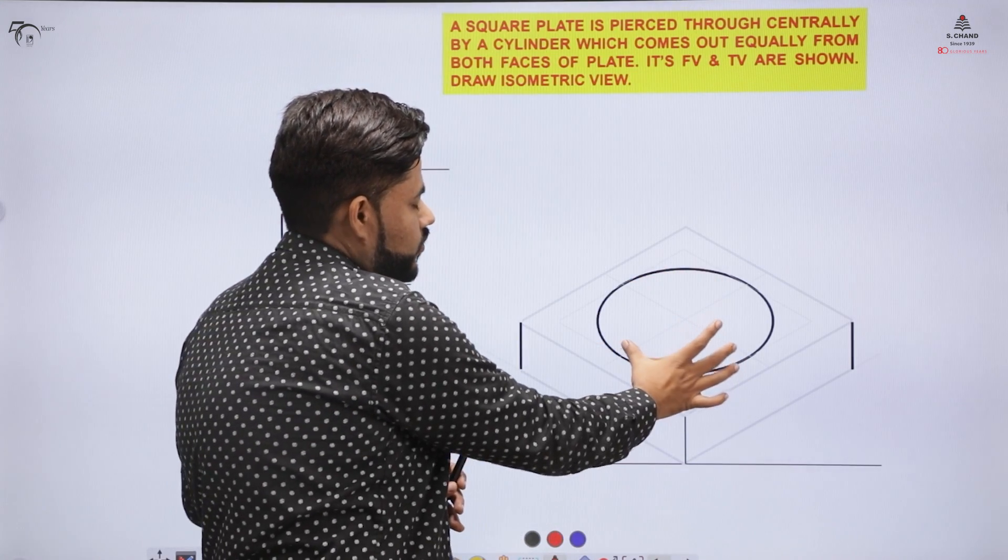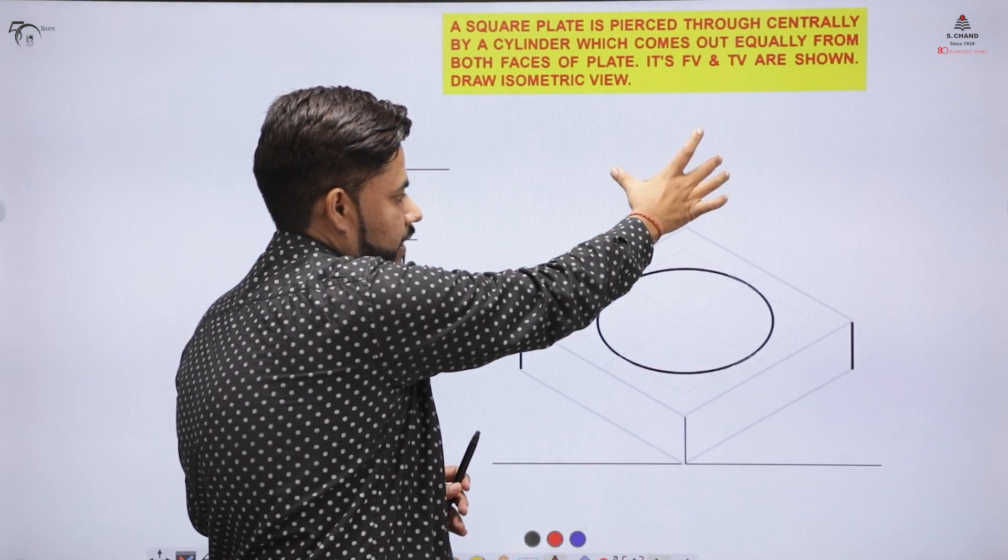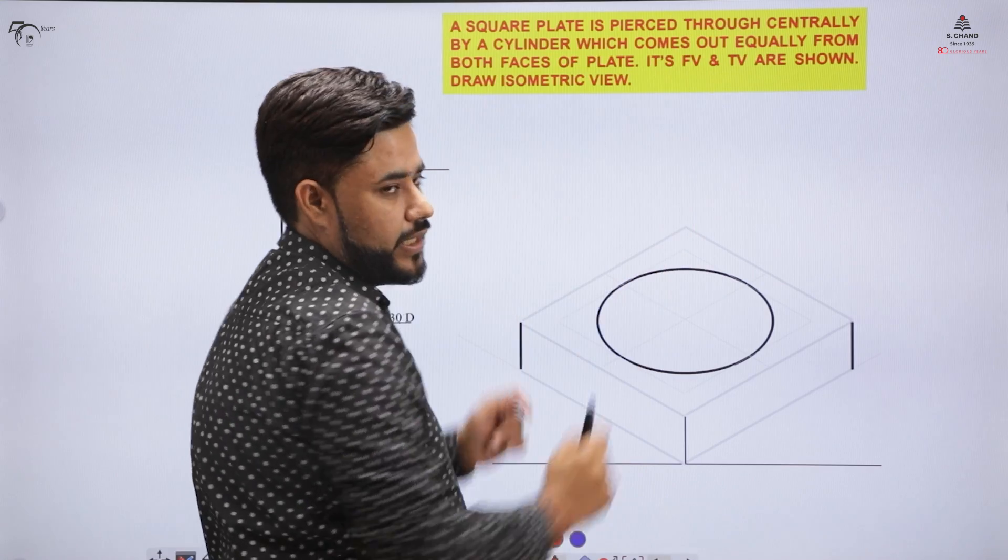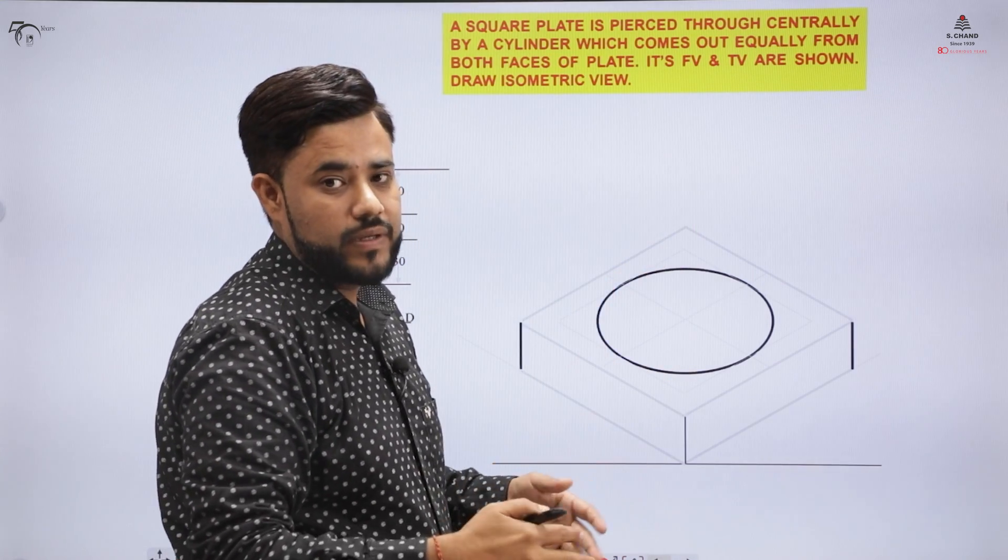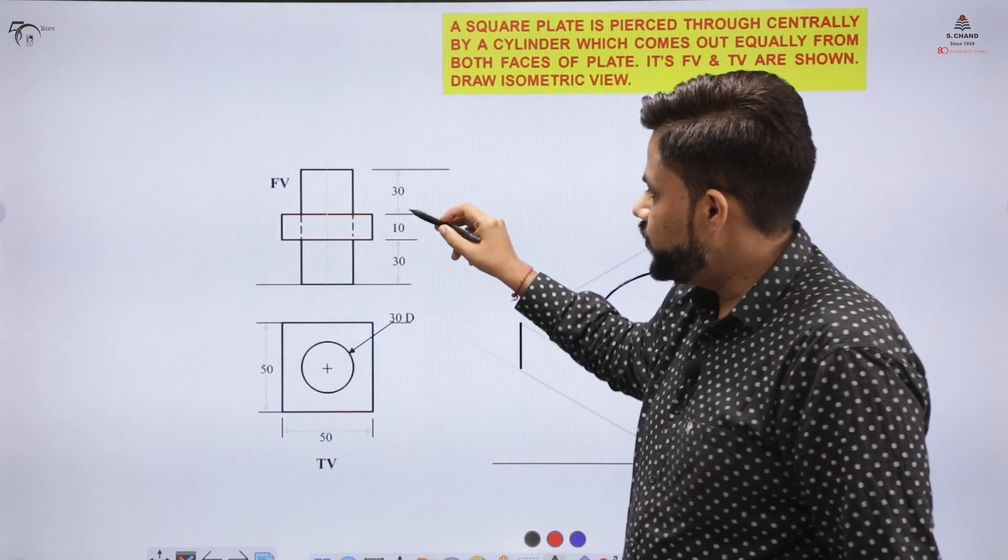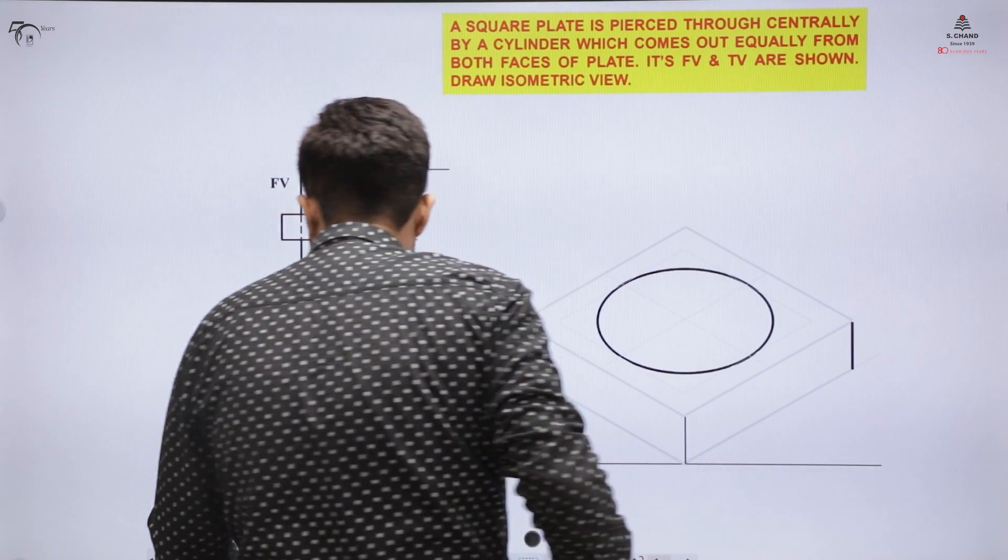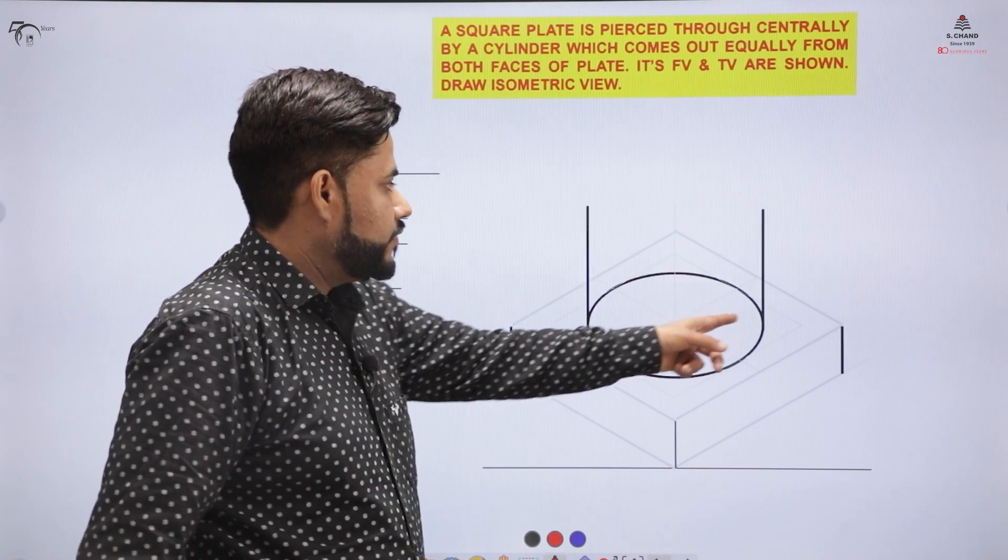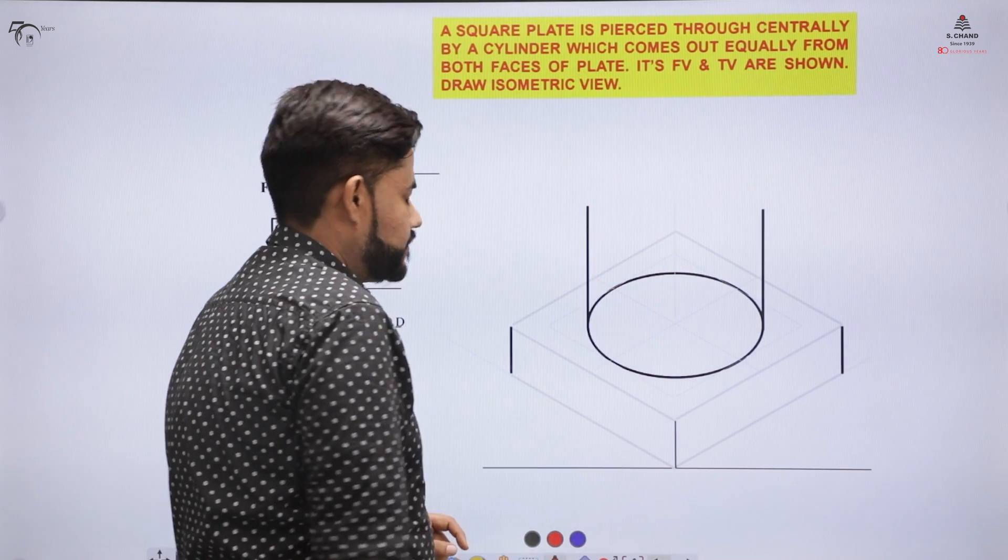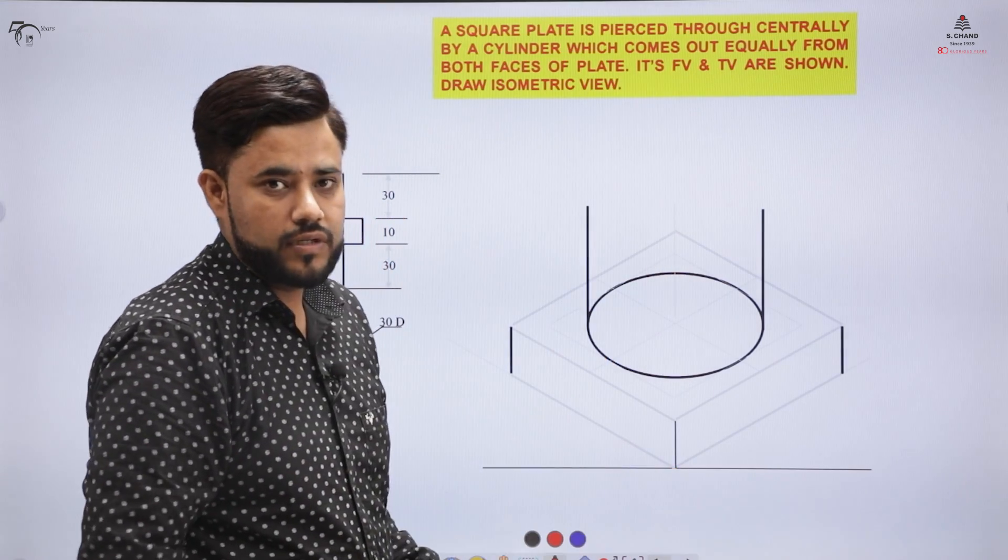Now I need to place this cylinder equally from this side above and also from the bottom. For this I need to increase the height of this circle so that it becomes a cylinder. The height of cylinder is 30 mm above and 30 below. Here you need to make two lines which are at a distance of 30 mm and these are perpendicular lines.